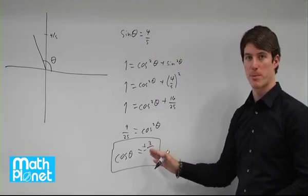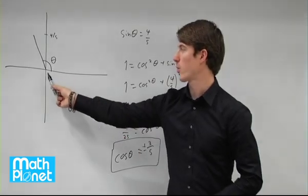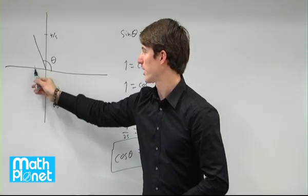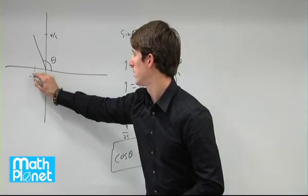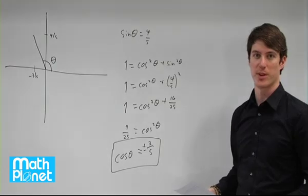So the square roots give us a positive or a negative 3 fifths, but since it's in the second quadrant, we want this length here, so we want the negative 3 fifths. So the answer is negative 3 fifths.